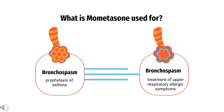What is Mometasone used to treat? Inhaled Mometasone furoate is indicated for prophylaxis of asthma in patients greater than or equal to 4 years. Applied topically as an ointment, Mometasone furoate is indicated for symptomatic treatment of dermatitis and pruritus in patients greater than or equal to 2 years. Mometasone furoate nasal spray is available both over-the-counter (OTC) and by prescription.